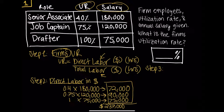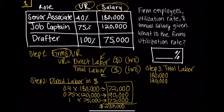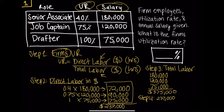Step three: find total labor. We know that total labor is going to include all the salary — the salary that went towards both indirect and direct expenses. In this case, we'll go ahead and use the numbers as listed in the salary column: $180,000 plus $120,000 plus $75,000, which yields $375,000. Step four: plugging in the numbers. We have our total labor and we found our direct labor: $237,000 divided by $375,000. Multiply that number by 100 to get it as a percentage. We'll round up — that is 63.